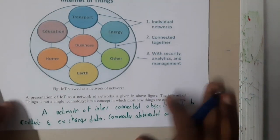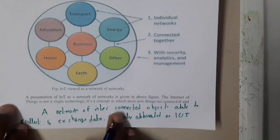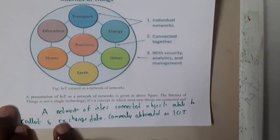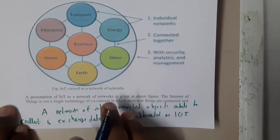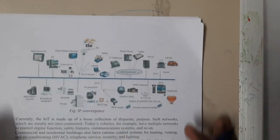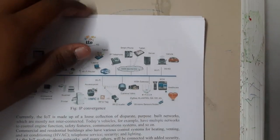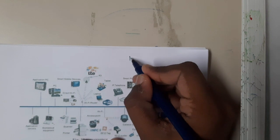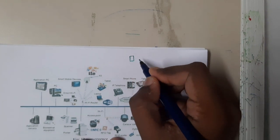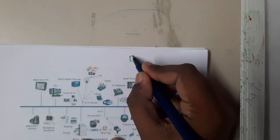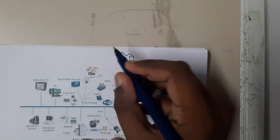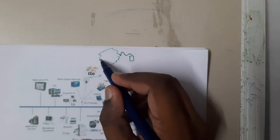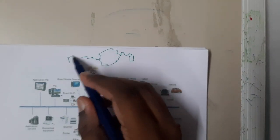So what is IoT? In simple words, IoT is a network of interconnected objects able to collect and exchange data among themselves. Basically, whenever you hear the word IoT, the thing that comes to your mind is sensors — these sensors or devices are connected to the internet to exchange data with other devices.